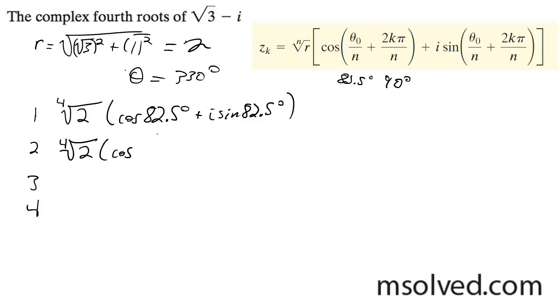For the second one, it's going to be cosine of 82.5 plus 90, so 172.5 degrees. The third is going to be 262.5 degrees.